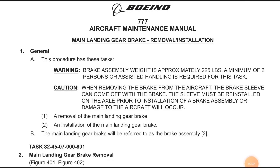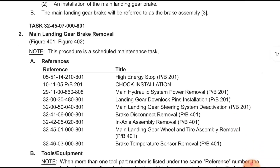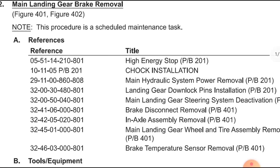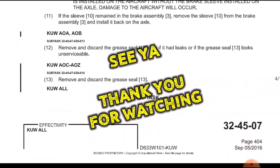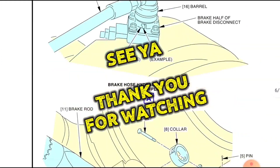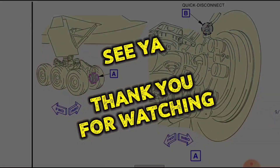Here is the Boeing aircraft maintenance manual example for replacement of brake assembly. In the starting of the AMM, in the alpha reference section, all the sub-task references are given. During removal of brake assembly, all these sub-tasks can be made into separate individual entries, each giving reference for the brake assembly removal. That's all from the AME Logbook episodes — see you in another amazing aviation video. Don't forget to subscribe. Keep watching, keep learning. Thank you.